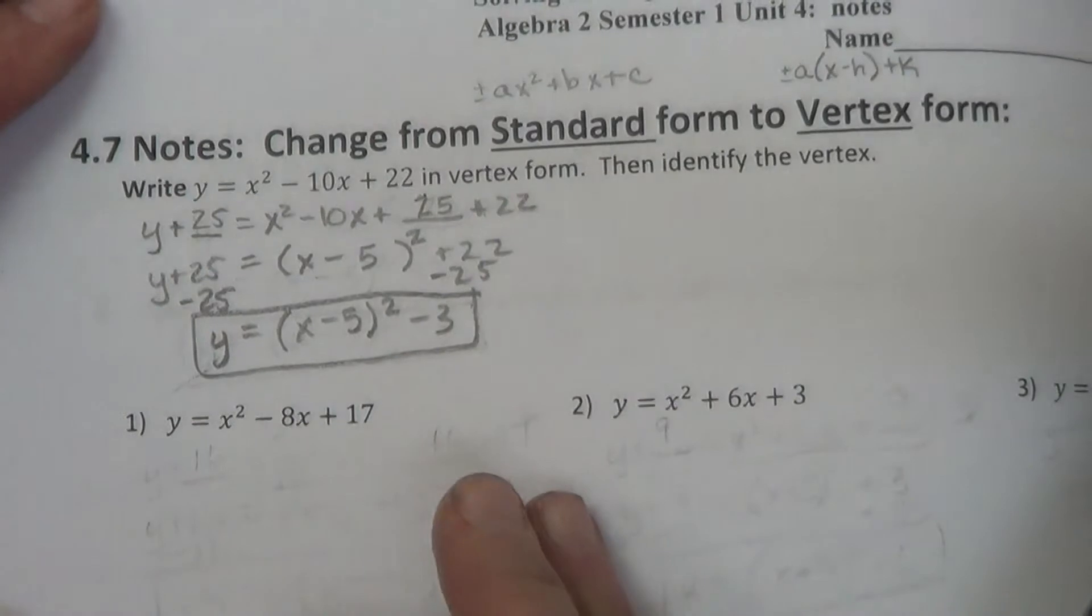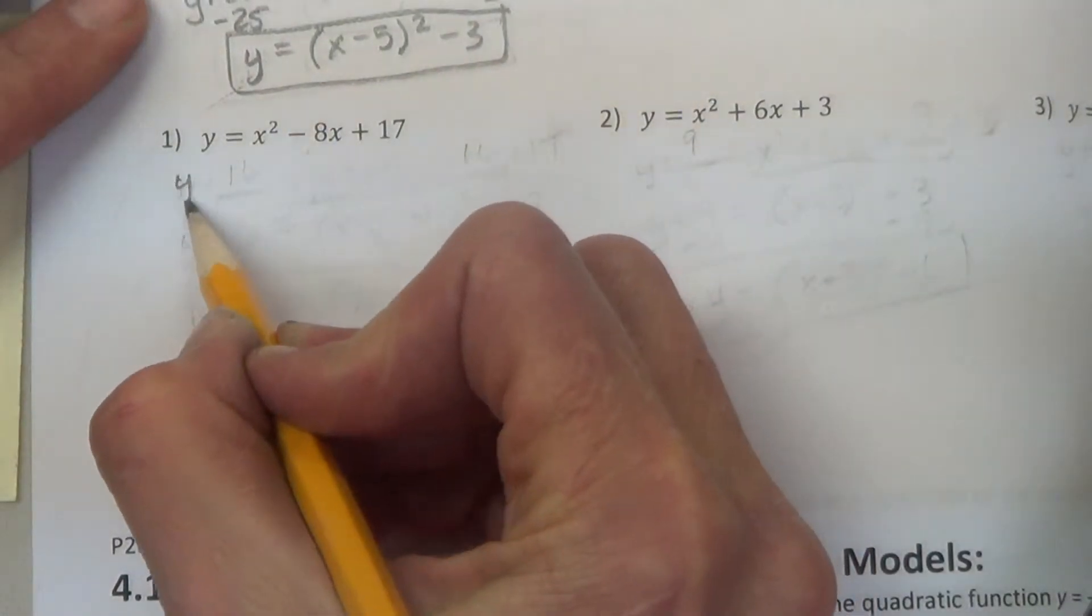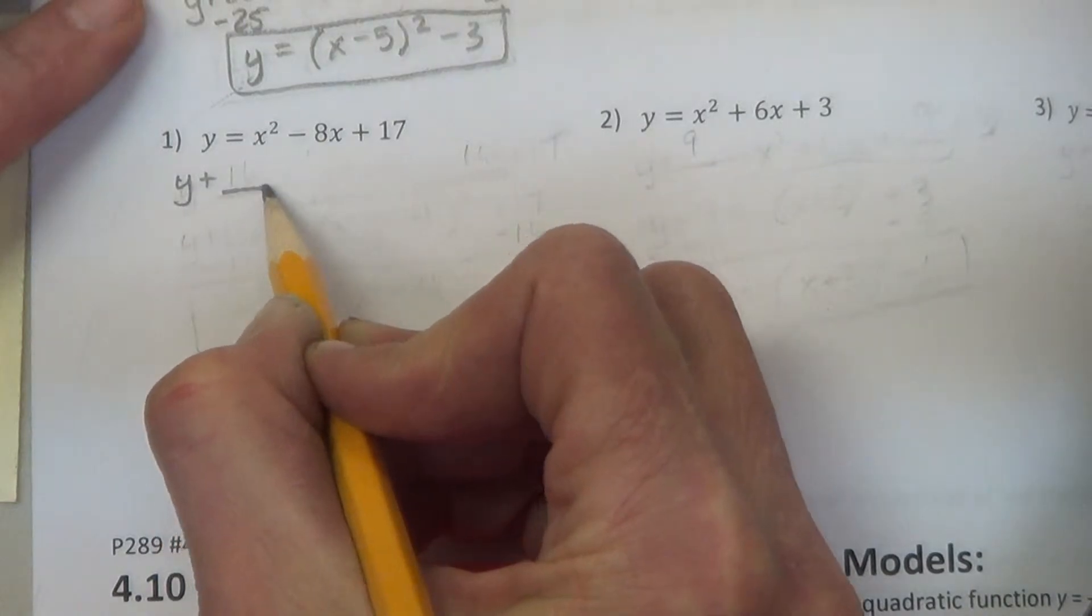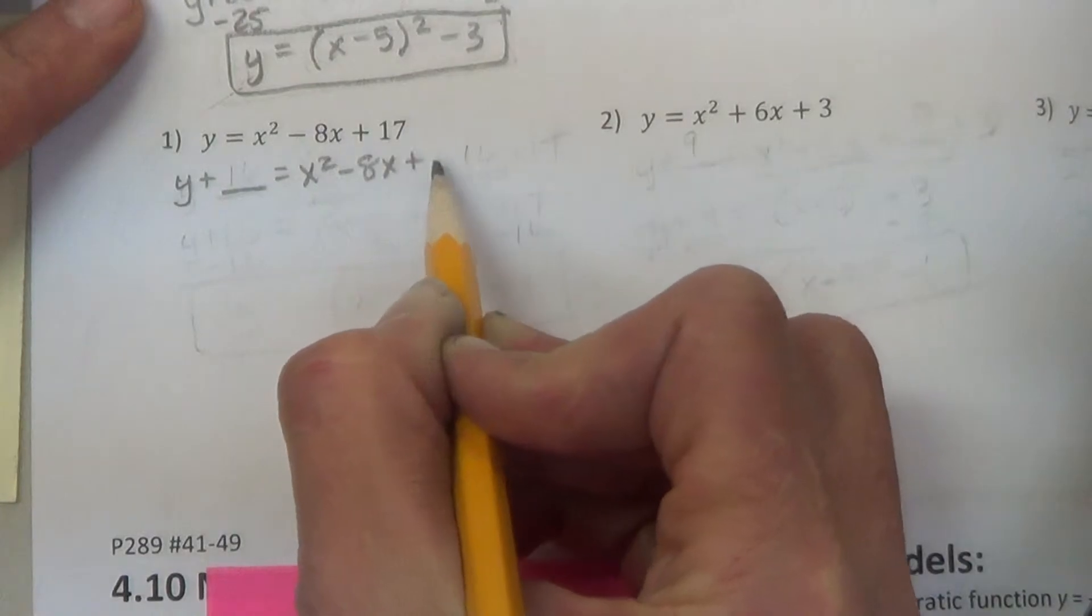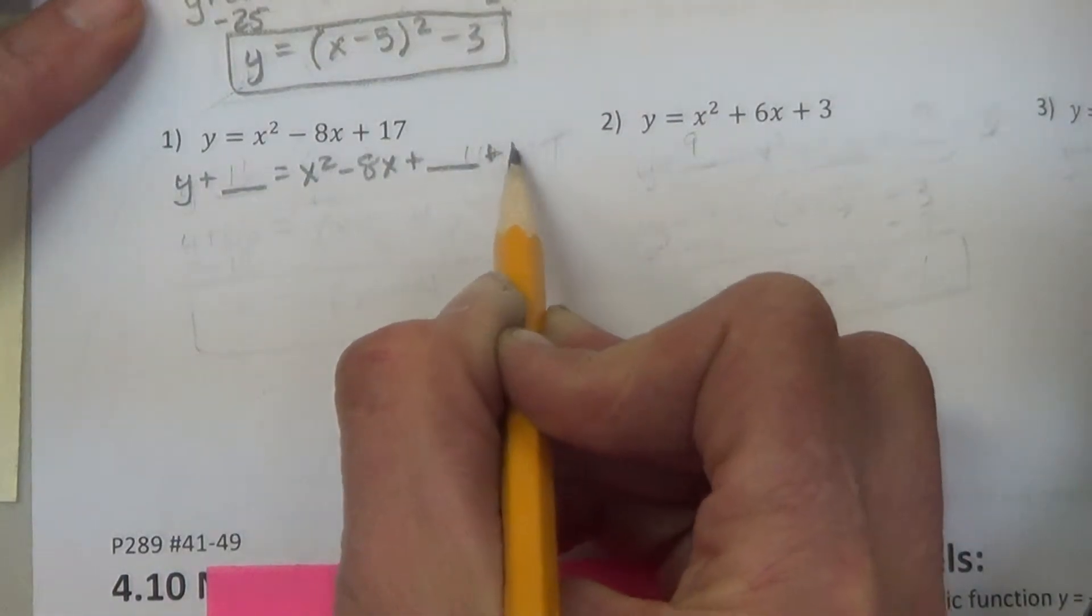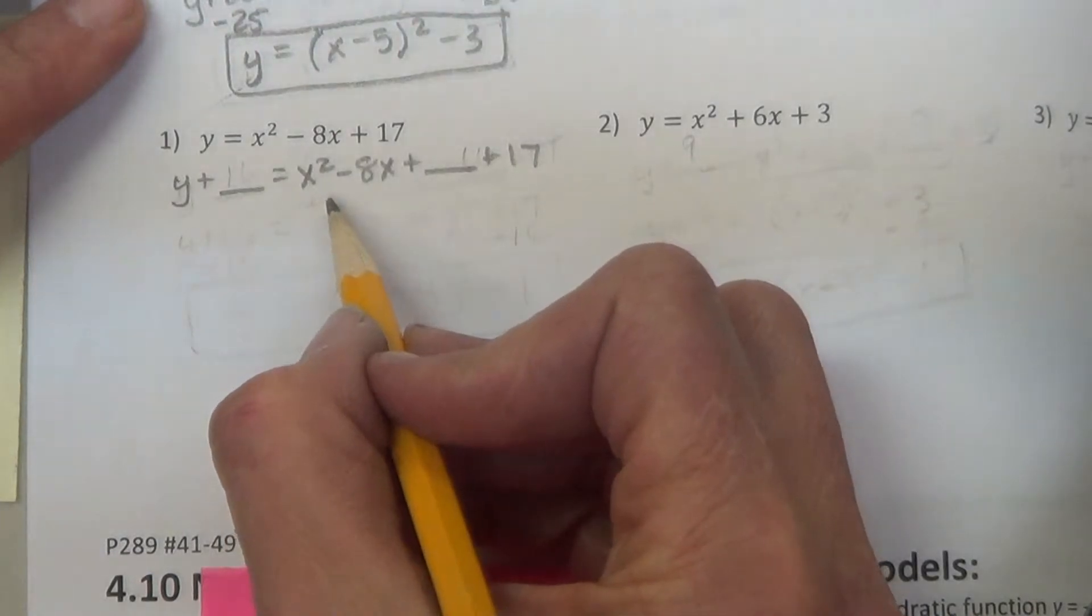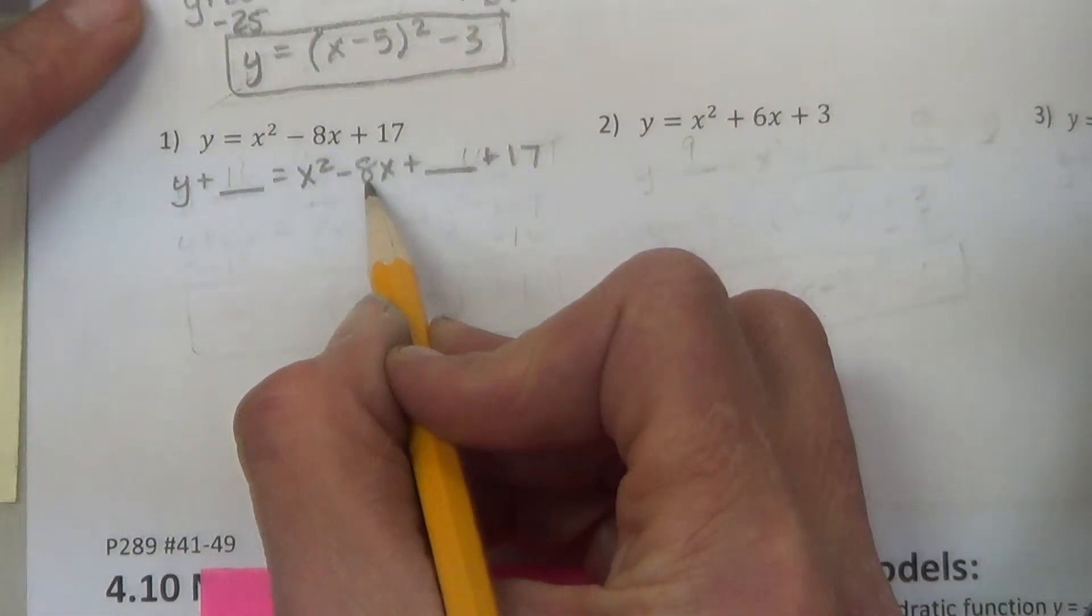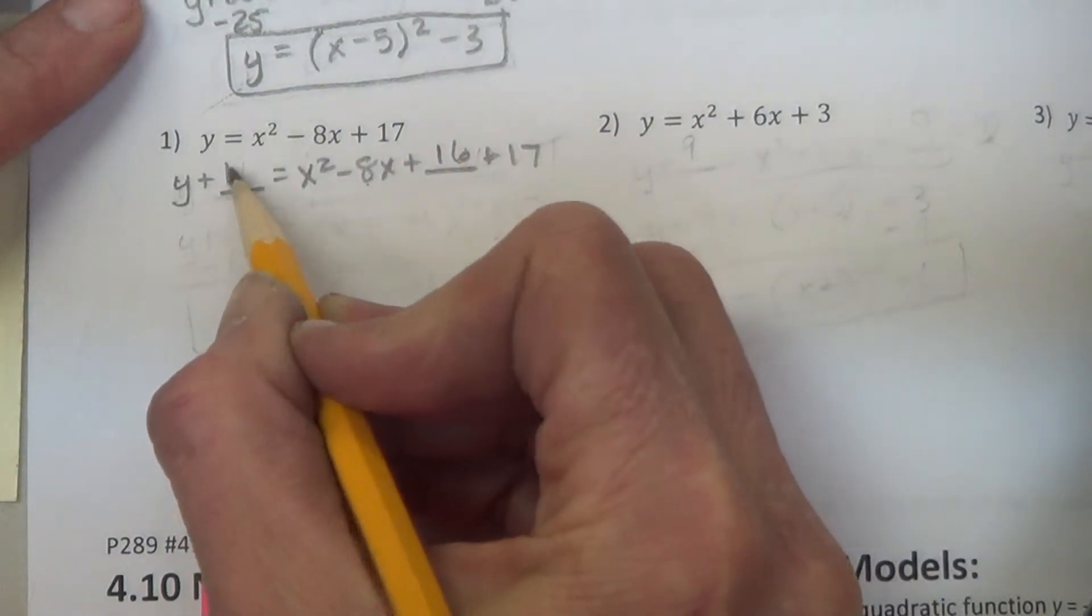Next one. y plus something equals x squared minus 8x plus something plus 17. Now we ask ourselves, what's half of 8 squared? 16. 16 over here as well.